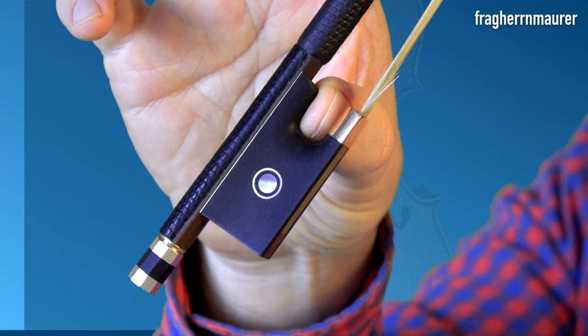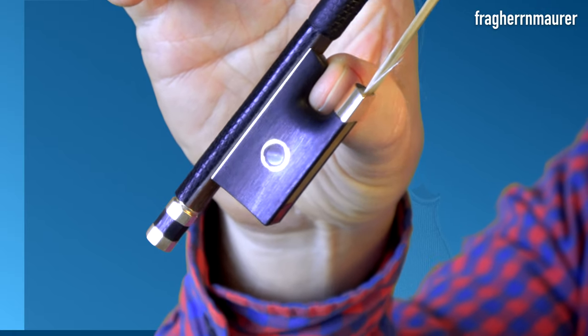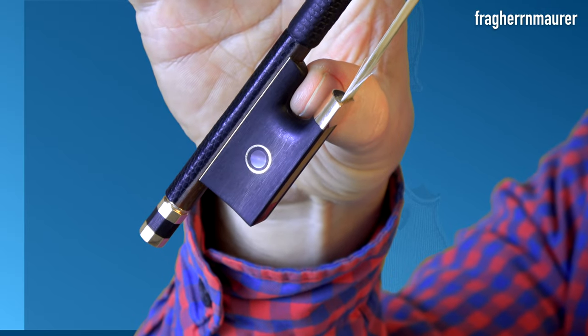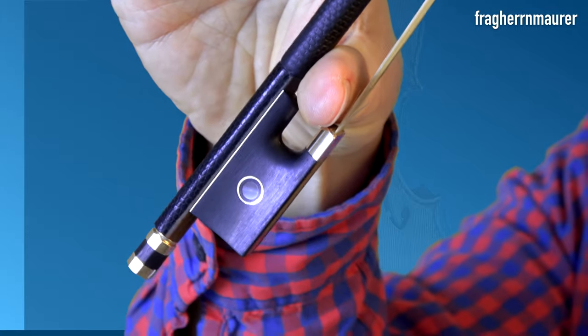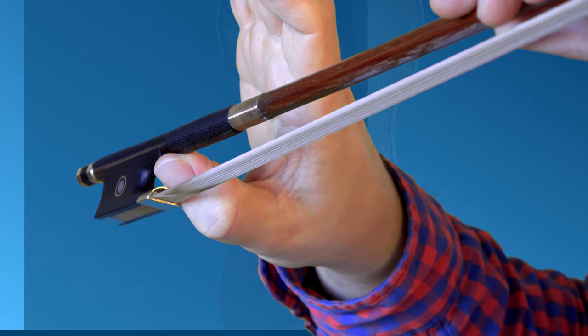Be careful that your thumb does not end up in the gap of the frog and that it doesn't peek out on the other side of the stick of the bow. Make sure your thumb remains curved.